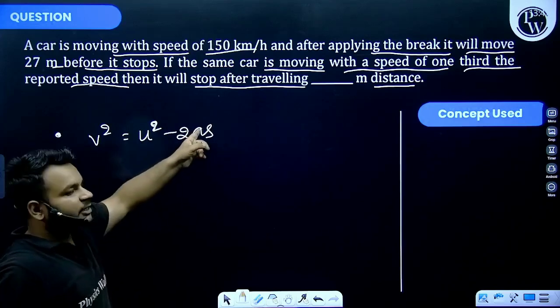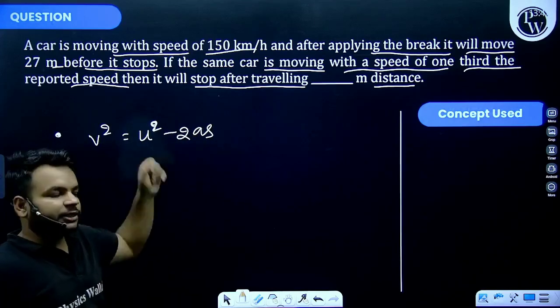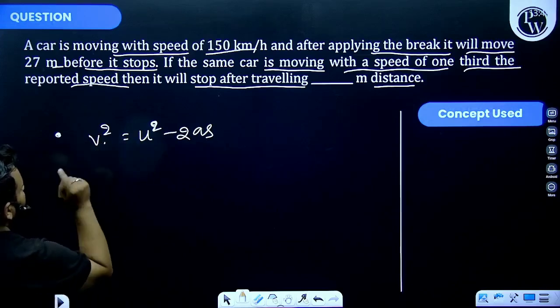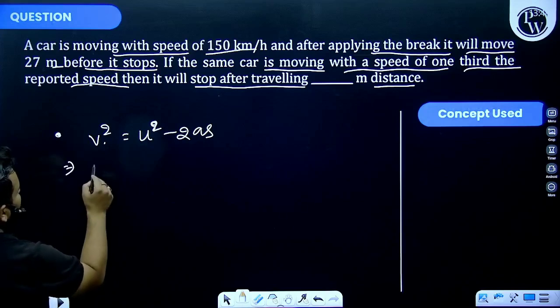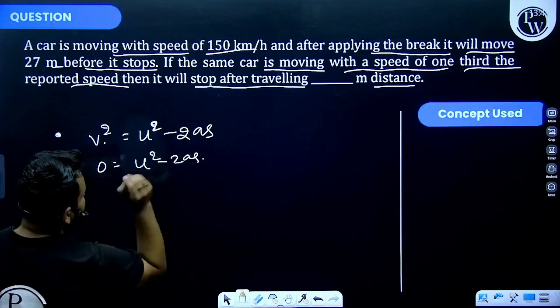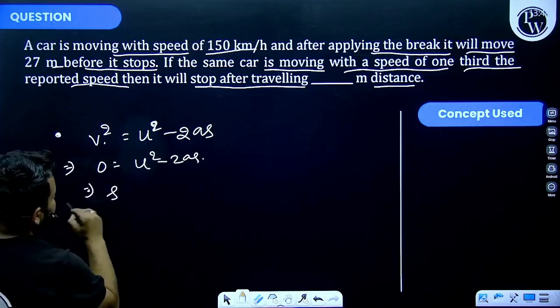Okay, so we know the car finally stopped, that means velocity is equal to zero. So we can write 0 is equal to u² minus 2as. That implies a stopping distance s is equal to u² divided by 2a.